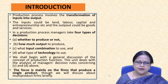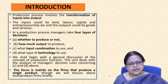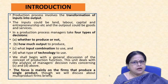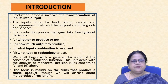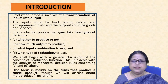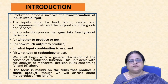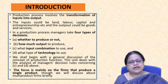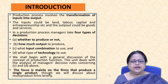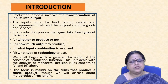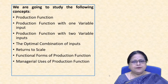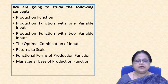What is production? A production process involves the transformation of inputs into output — it is a technical relationship between inputs and output. Inputs could be land, labour, capital, and entrepreneurship, while outputs could be goods and services. In a production process, the manager makes four decisions: whether to produce or not, how much to produce, what input combinations to use, and what type of technology to use.